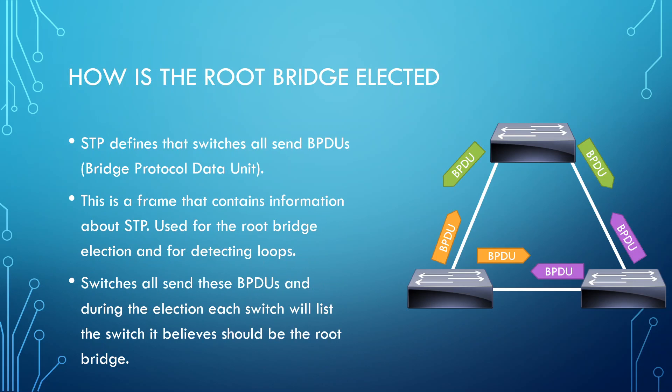Now let's look at the root bridge election process. Before we talk about that, we need to understand that switches all send something called a BPDU, which stands for Bridge Protocol Data Unit. A BPDU is a frame which contains information about the STP topology. It's used for two things: it's used for the root bridge election, and it's also used for topology changes. Most importantly, it's also used for detecting loops.